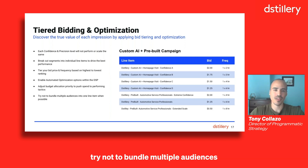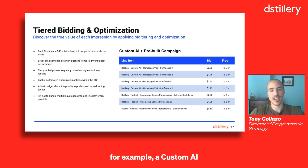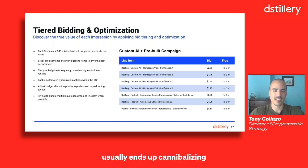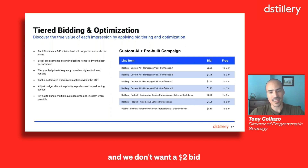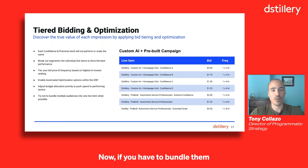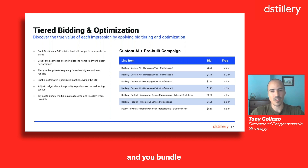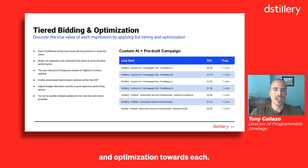Last but not least: try not to bundle multiple audiences into one line item when possible. When you bundle, for example, custom AI A, B, C, D into one line item, the largest segment of the bunch usually ends up cannibalizing a lot of that delivery for the day, and any performance that confidence levels A and B are providing will be completely washed out by confidence level D's impression volume. We want to break out and apply value to each independently — we don't want a $2 bid being applied to a confidence D audience. If you have to bundle for whatever reason, the recommended middle ground is to bundle your high-ranking segments together and your low-ranking segments together, so you at least have some form of leverage and control over applying value and optimization towards each.